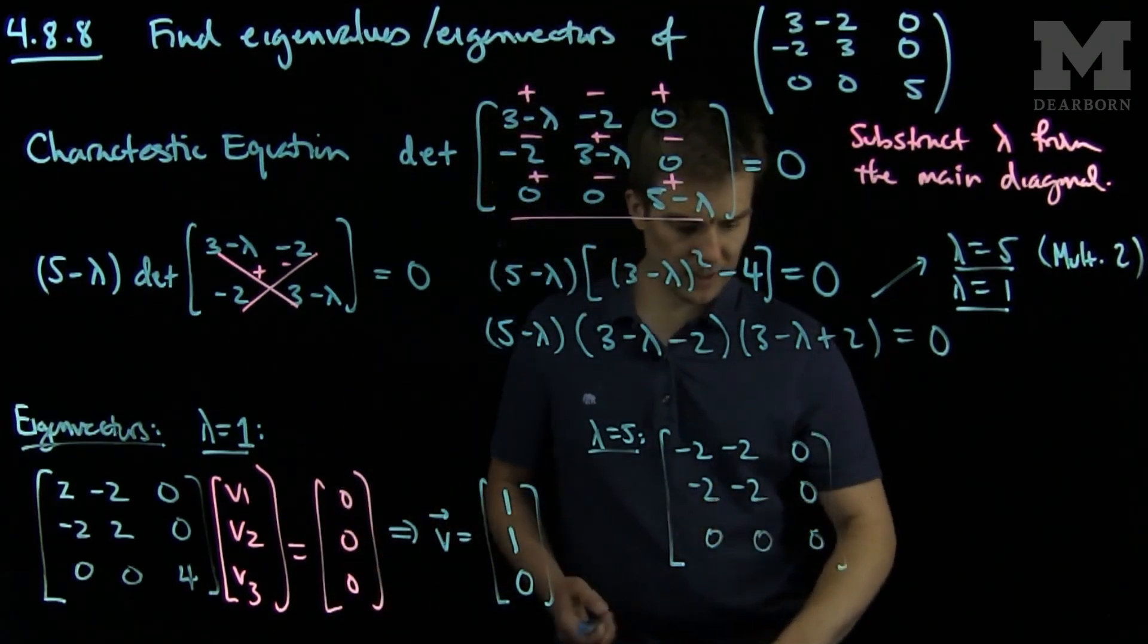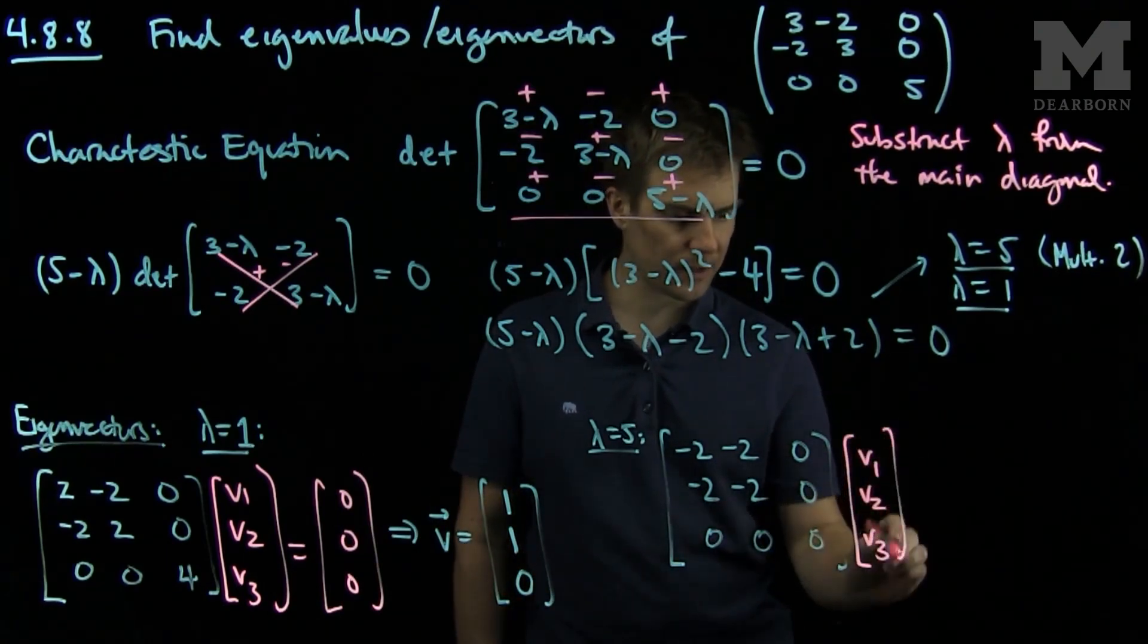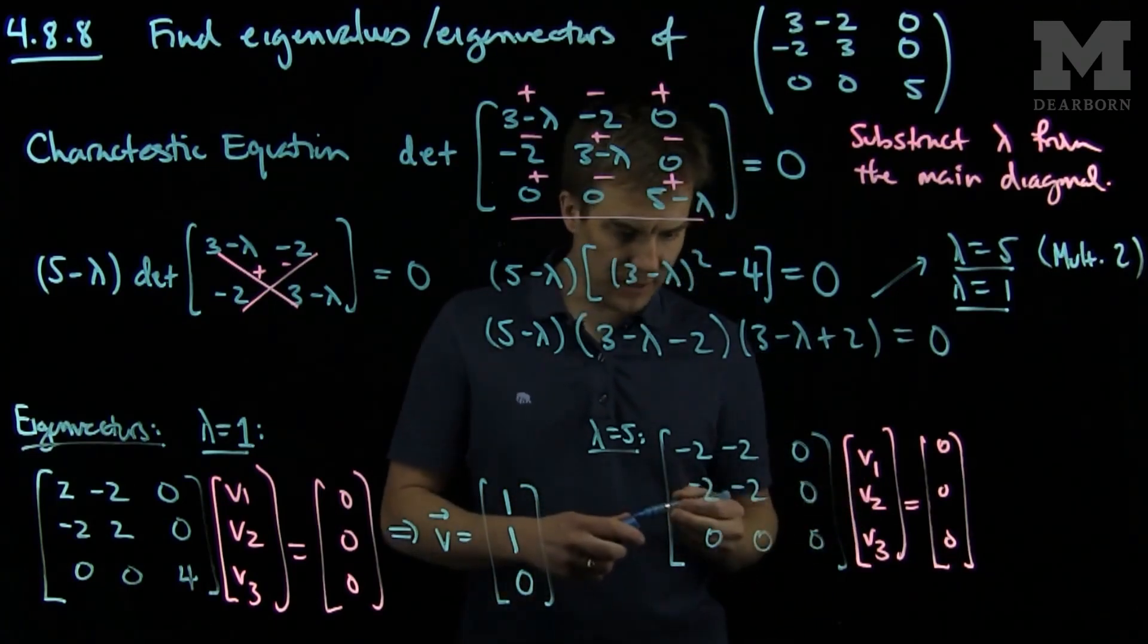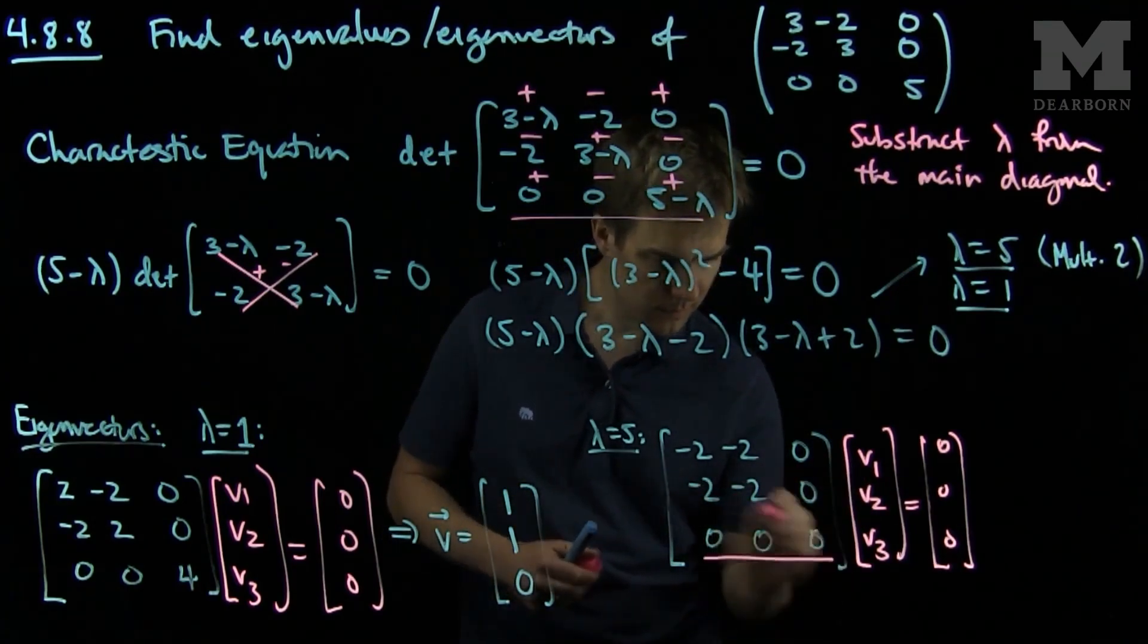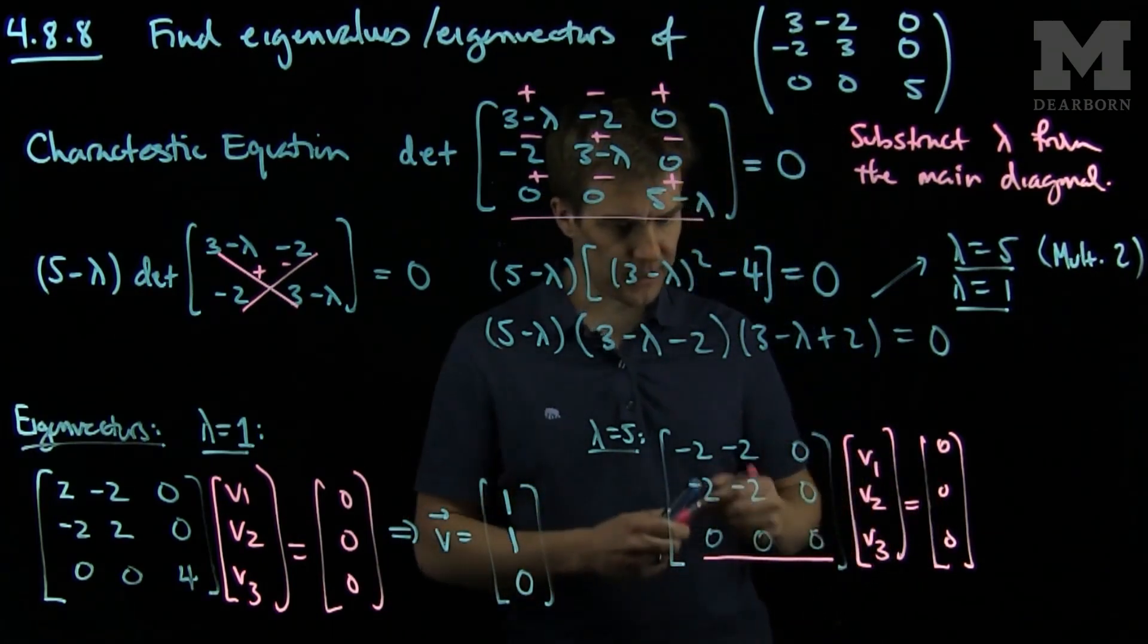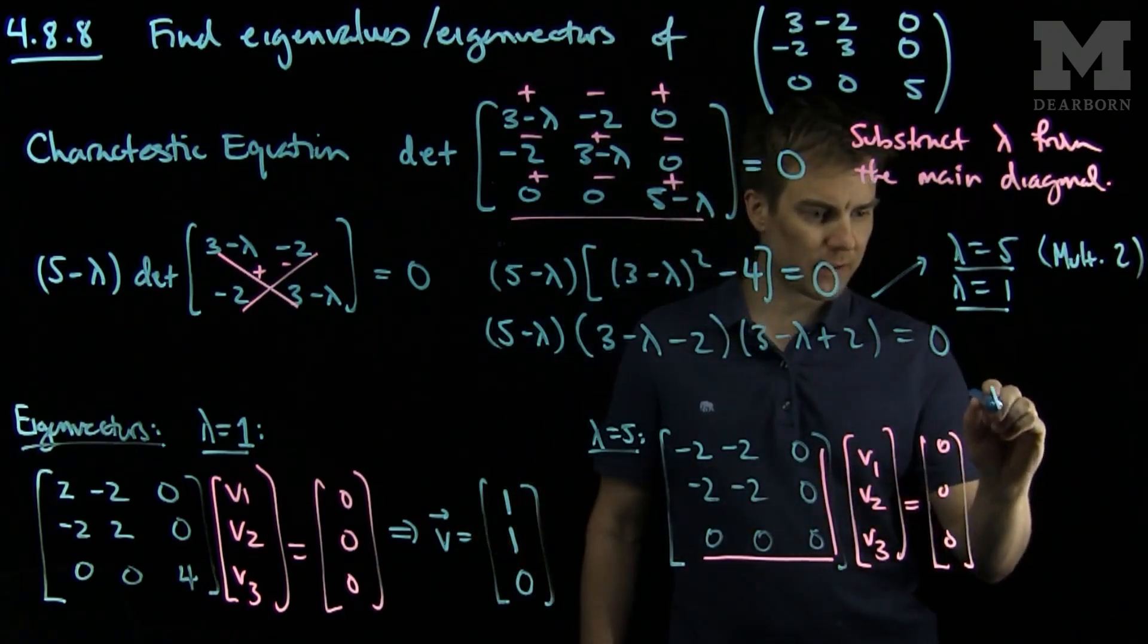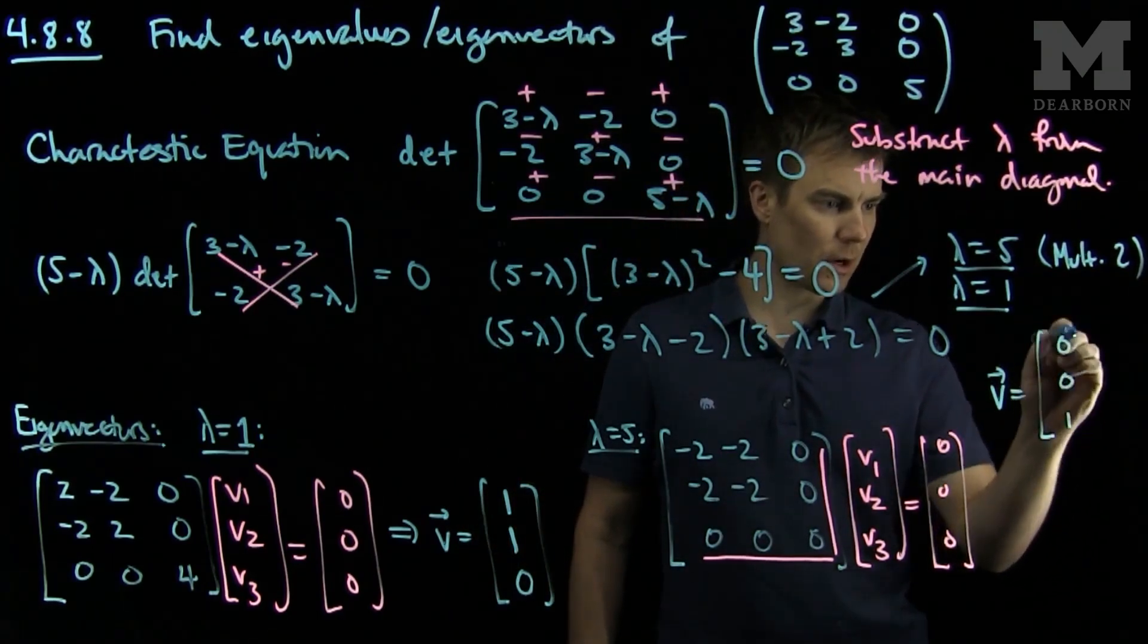And what I'd like to do is find an element in the null space of this. So v1, v2, v3 will be my eigenvector that gives 0, 0, 0. And over here we notice that this last row contains all 0's, and this last column also contains all 0's. Which means no matter what v3 is, it will always be cancelled out. So one choice of an eigenvector for this matrix will be 0, 0, 1.